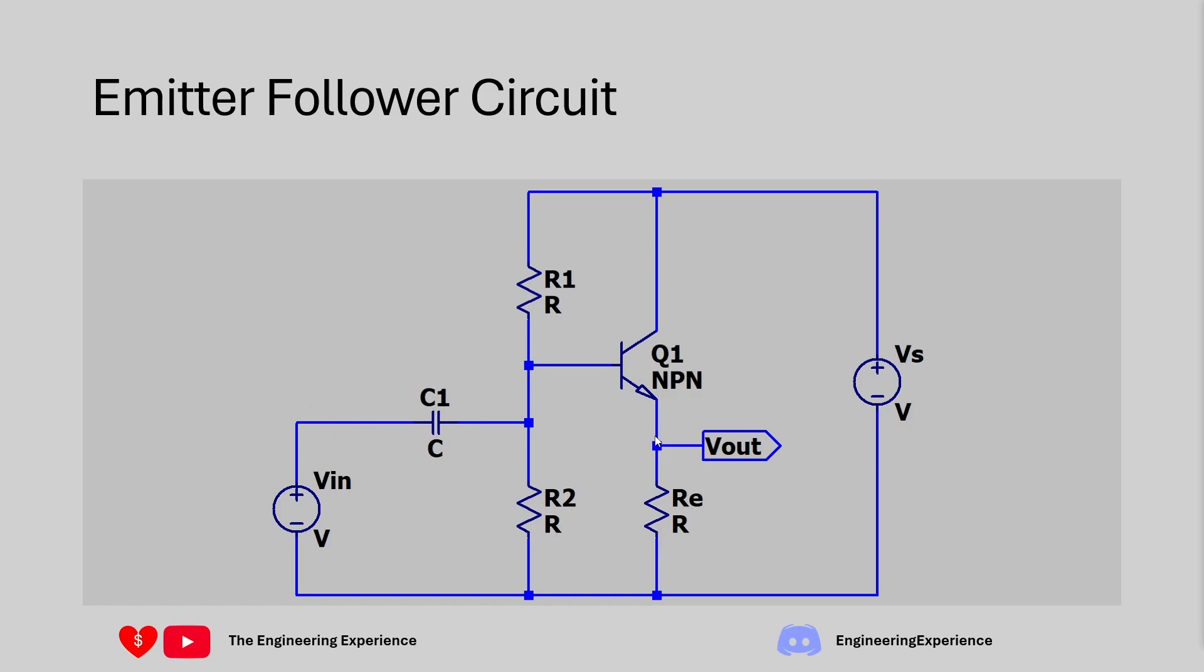One of the requirements from the question is to set the quiescent current which is the current going in this direction to 5 milliamps when there is no input. We can use R1 and R2 to bias that properly and to set the midpoint as well for Vout. So again, R1 and R2 make sure that the transistor is operating in the active region and sets up a bias point or quiescent current for Vout as well.